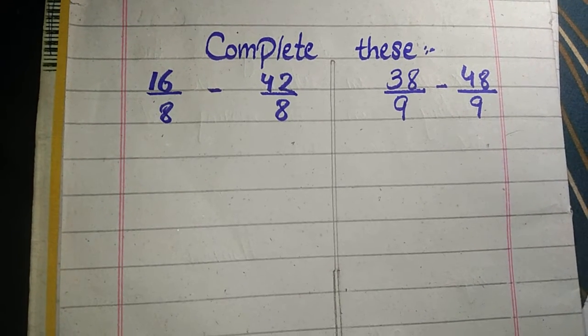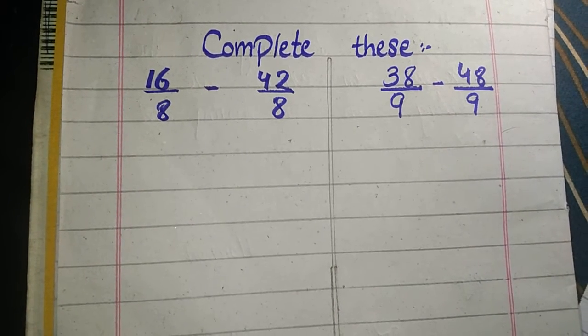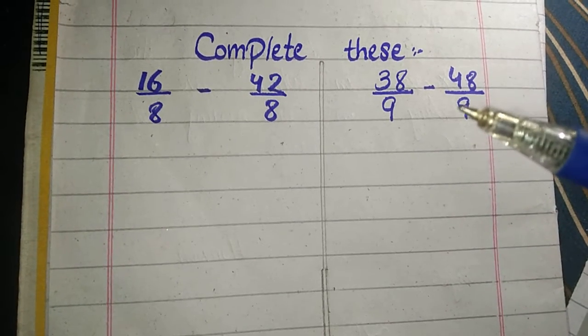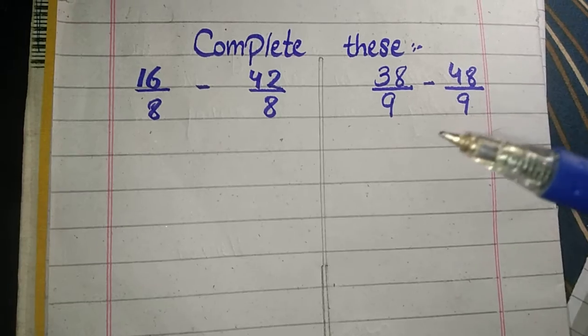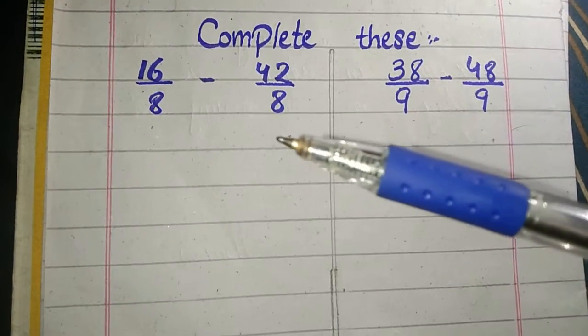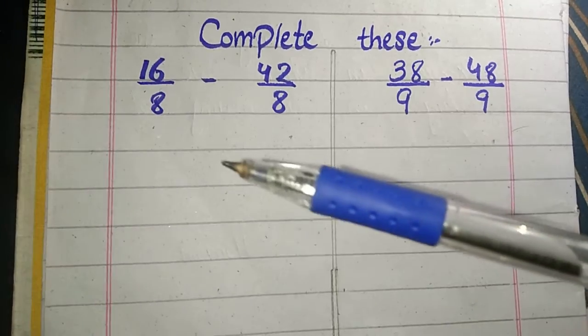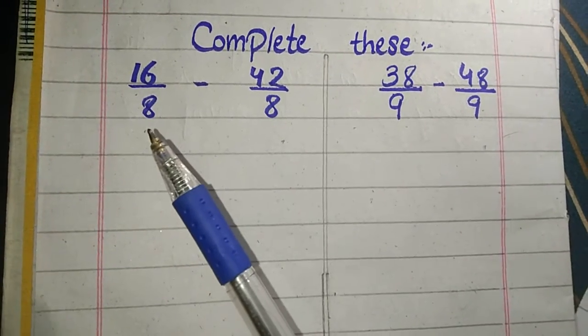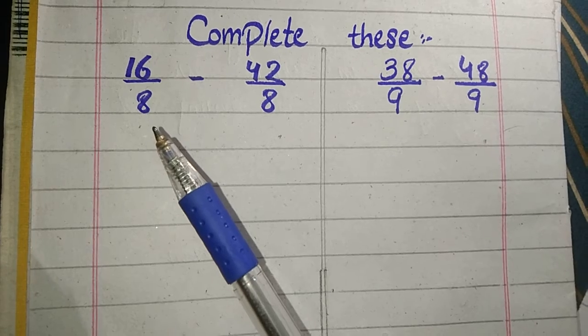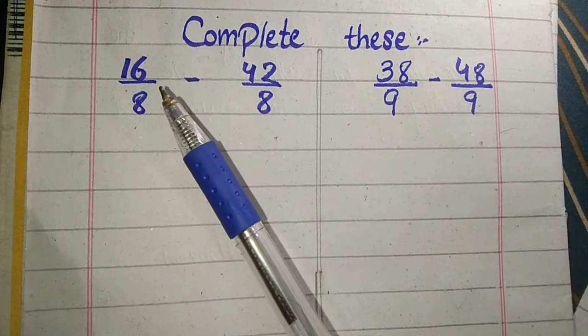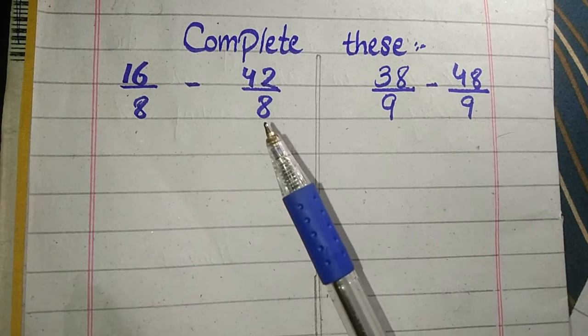Assalamu alaikum, hope you are all fine. My name is Ikra. Today we have to solve these questions. First question is 16 by 8 minus 42 by 8. It is called fraction form. The downside digit is called denominator and the upside digit is called numerator. If the denominators are the same,